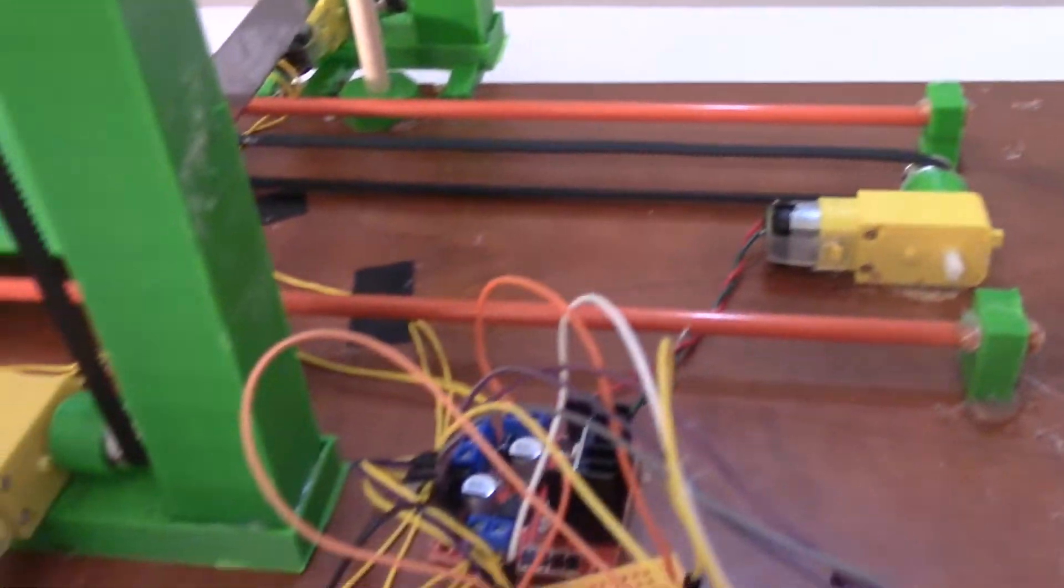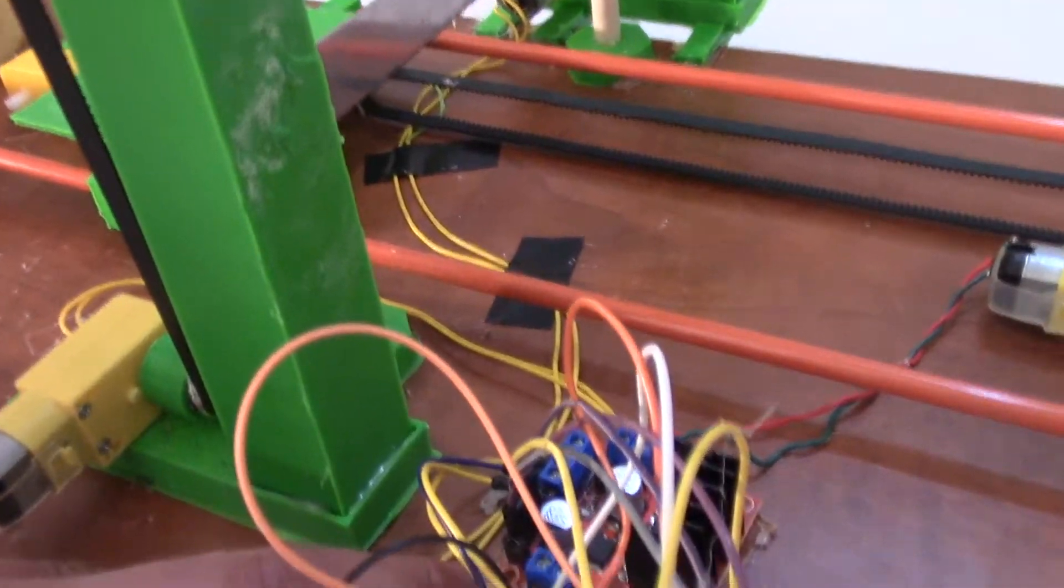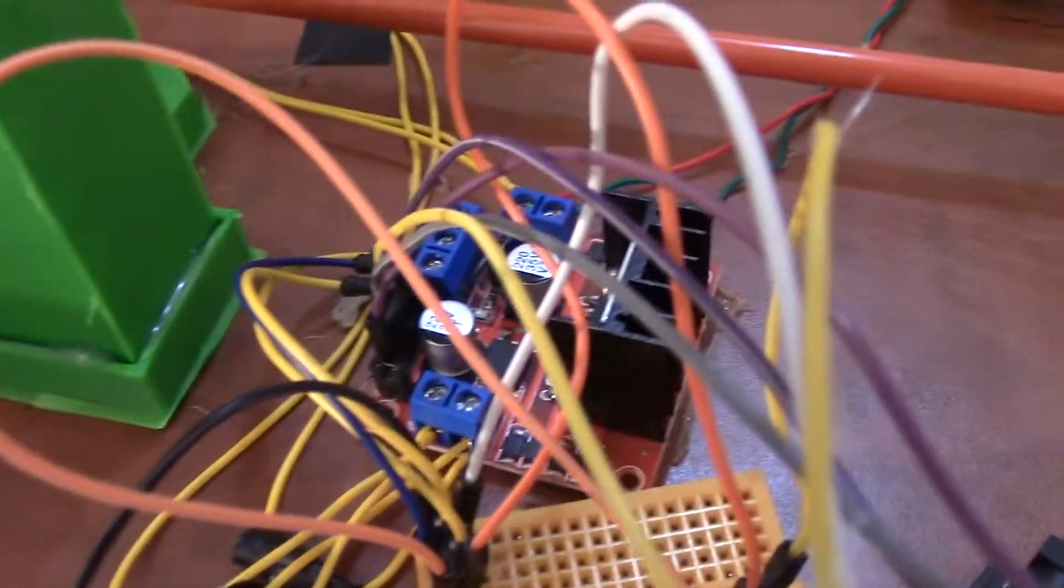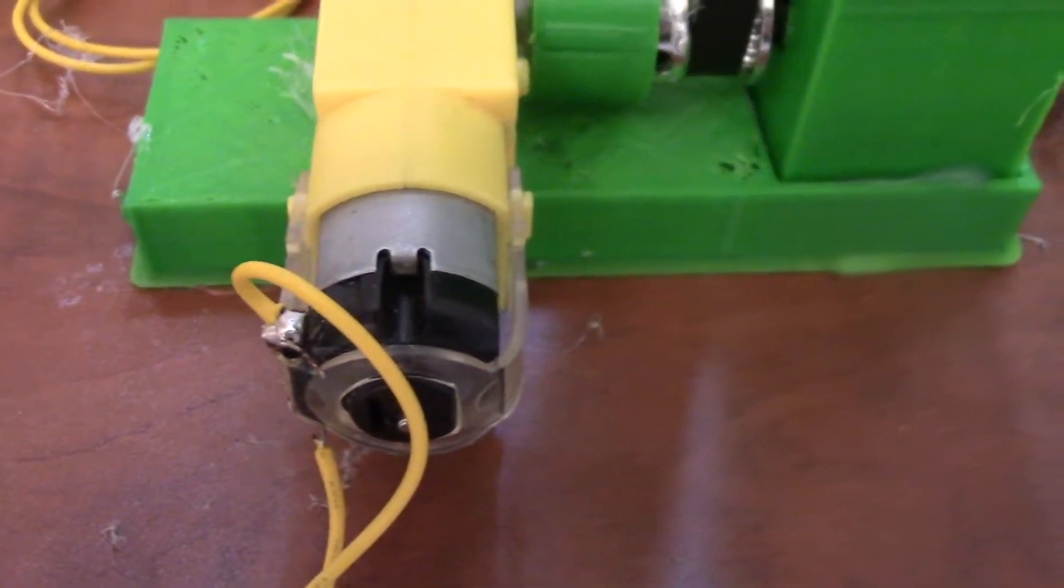So this L298N motor driver shield is meant to control one motor at each end, but you can easily change this up with the wiring. The next step is the same thing - this next pair of motors connects the same way. Whatever happens to this motor happens to this motor. It's nothing different, except over here I soldered the wires on instead of connecting them.